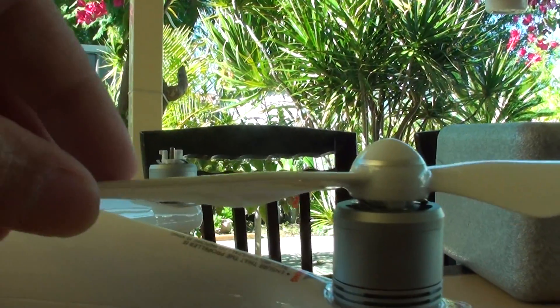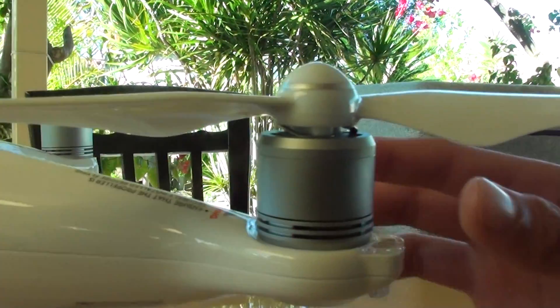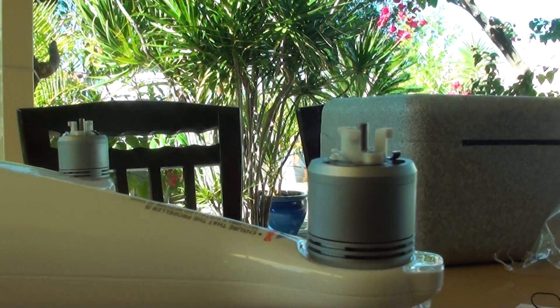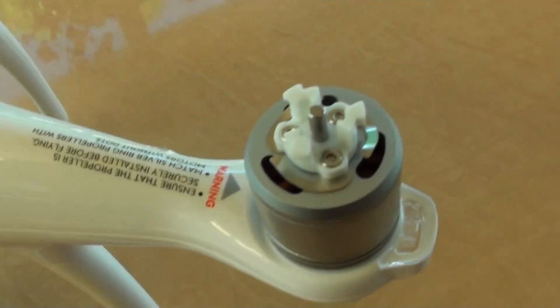So they can't move. Now to remove the propeller, push it down, you can see it's pushed down and then twist it, and you can take it off. So that's how you can install and remove.